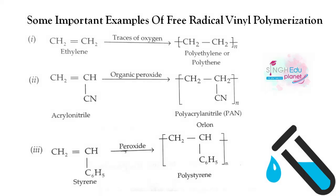Important examples of free radical vinyl polymerization: ethylene reacts with a trace of oxygen to give polyethene. Acrylonitrile with an organic peroxide gives polyacrylonitrile — the carbon-carbon double bond opens and shifts along the chain with each addition. Similarly, styrene with a peroxide initiator gives polystyrene, completing this topic.